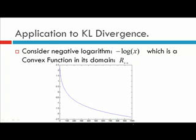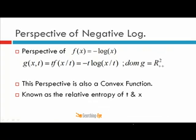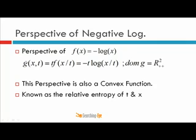Now consider the perspective transformation of the negative logarithm. The perspective function of a function f is a function g of variables x and t such that g(x, t) = t times f(x/t). Taking the perspective function of negative log x gives us the function negative t times log(x/t), with domain where both t and x must be greater than zero.